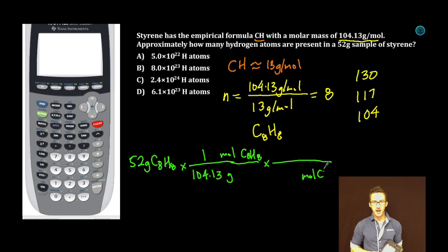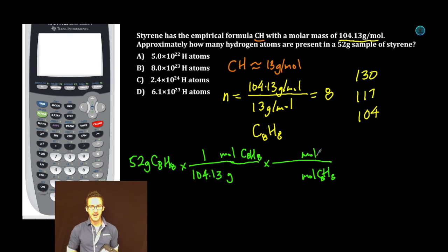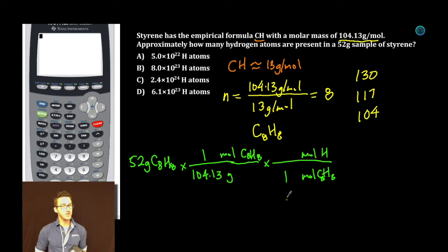Now let's convert from moles of styrene to moles of hydrogen. For every one mole of styrene, there are 8 moles of hydrogen. This is why it was so important that we figured out that molecular formula. And then finally, we're going to go from moles to atoms. One mole, Avogadro's number.